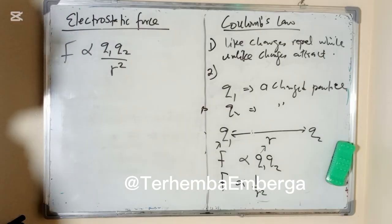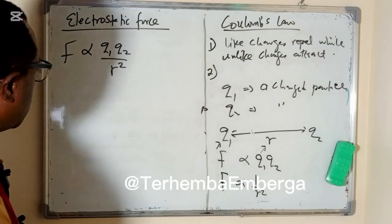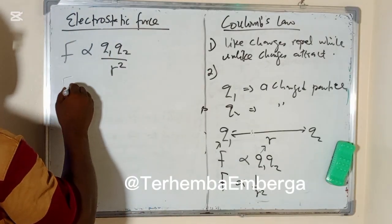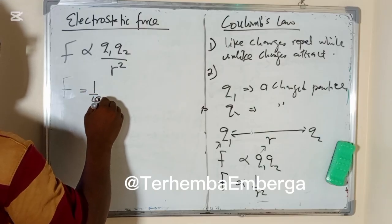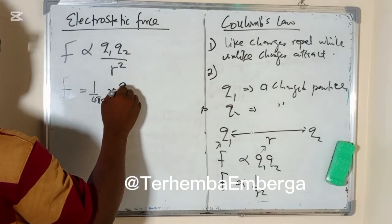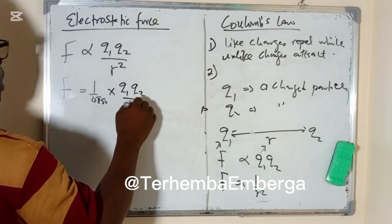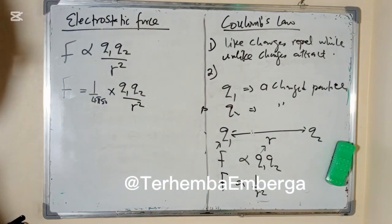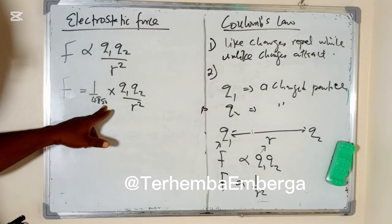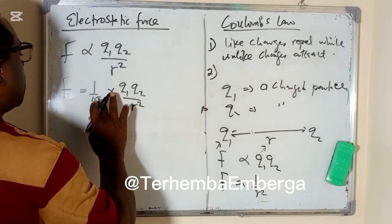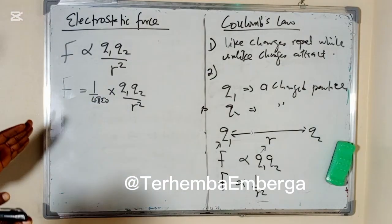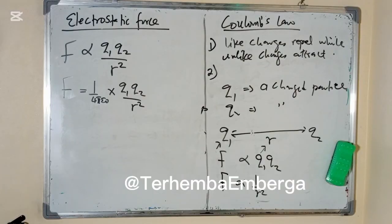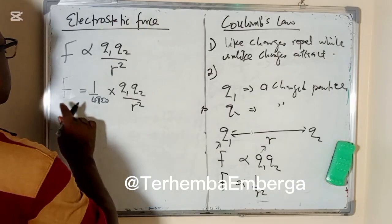We don't work with a proportionality sign, so we need to introduce a constant. The formula becomes F equals 1 over 4 pi times epsilon-naught, times Q1 Q2, all over R squared. Pi is a constant. This epsilon-naught is what we call the permittivity of free space — the medium in which the two charges are brought together, whether the medium of air or any other medium. That is what we call permittivity of free space.